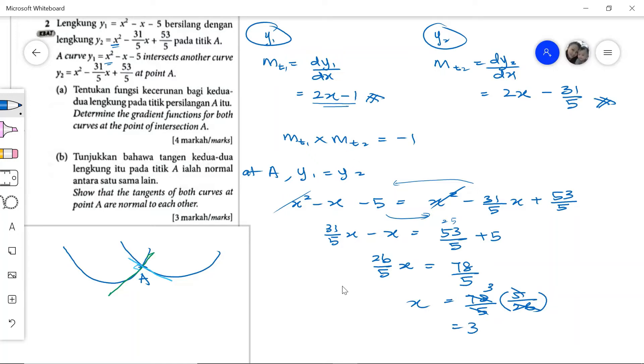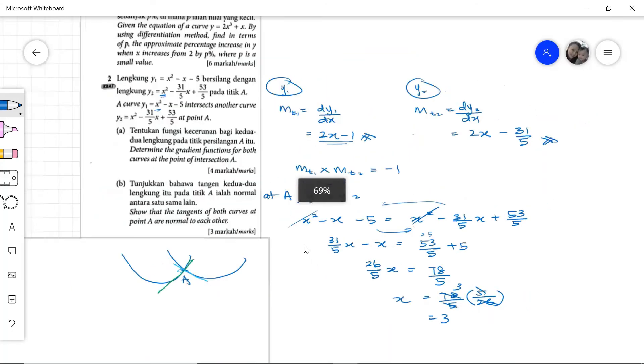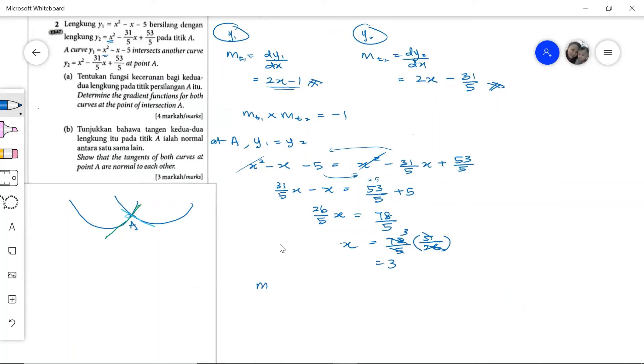Now we can find the product of the gradients. Taking m_t1, we have 2x minus 1 with x equals 3, and then multiply with 2x minus 31 over 5 times 6 minus 31 over 5. So we have 5 times 30 minus 31 over 5. Simplifying, we get negative 1.